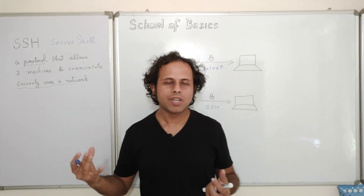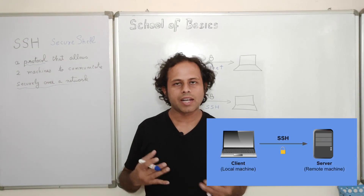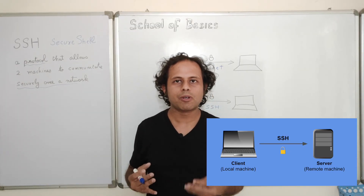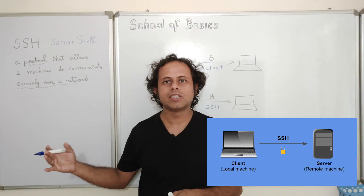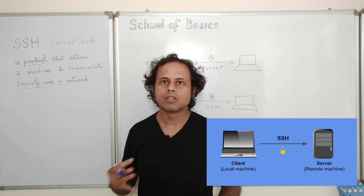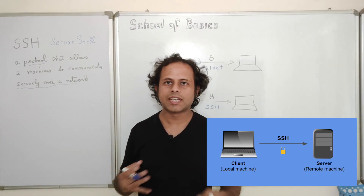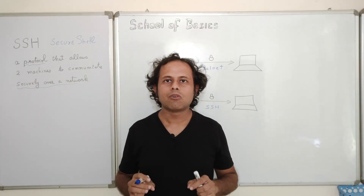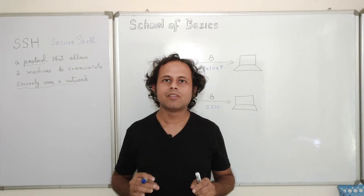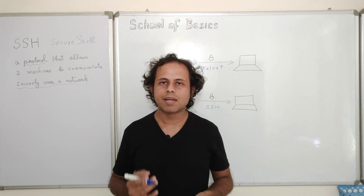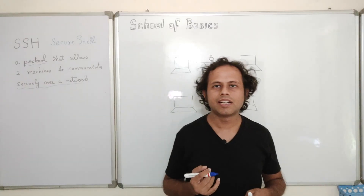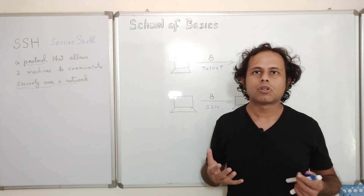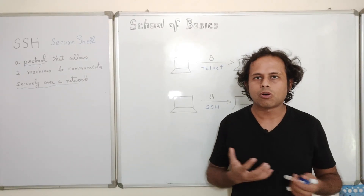It is not like two machines are connected directly — it happens over a network where we have a client and a server. The server is a remote machine and the client is our local machine. From our local machine we access the remote machine, transfer or communicate information, and exchange data. This is in very simple words what SSH is. Now to understand why we needed it, let us step back in history.